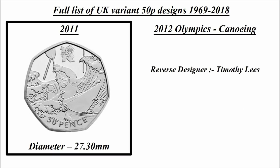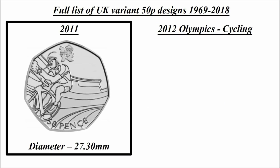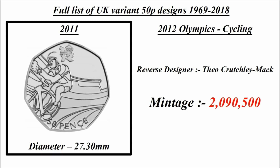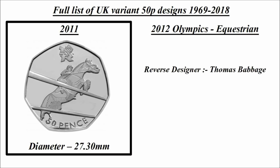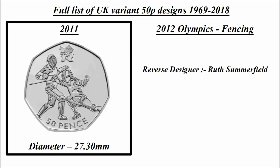Olympics canoeing: reverse designer Timothy Lees, mintage 2,166,000. Olympics cycling: reverse designer Theo Crutchley Mack, mintage 2,090,500. Olympics equestrian: reverse designer Thomas Babbage, mintage 2,142,500. Olympics fencing: reverse designer Ruth Summerfield, mintage 2,115,500.